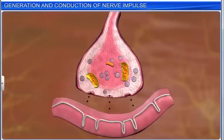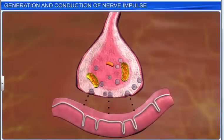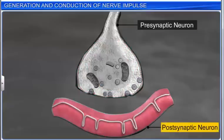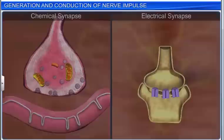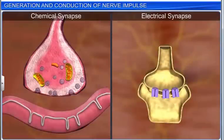A junction helps transmit the nerve impulse from one neuron to another. These junctions are called synapses. A synapse is formed by the membranes of a pre-synaptic neuron and a post-synaptic neuron, which may or may not be separated by a gap called the synaptic cleft. There are two types of synapses on the basis of the nature of transfer of information: chemical synapses and electrical synapses.